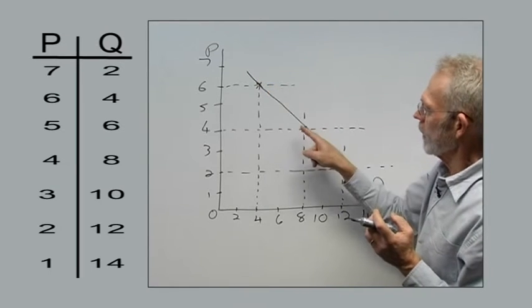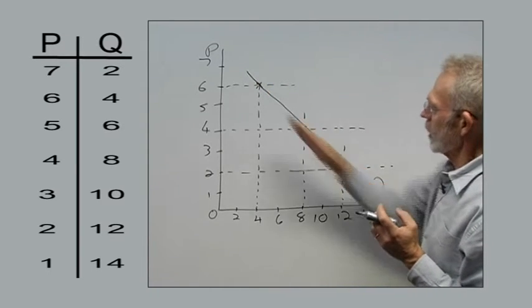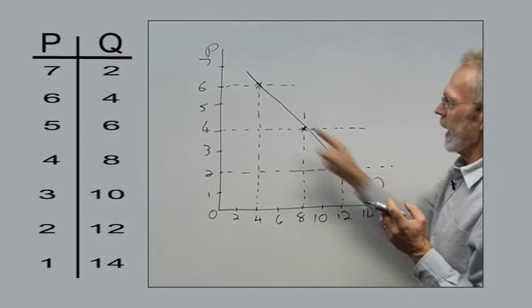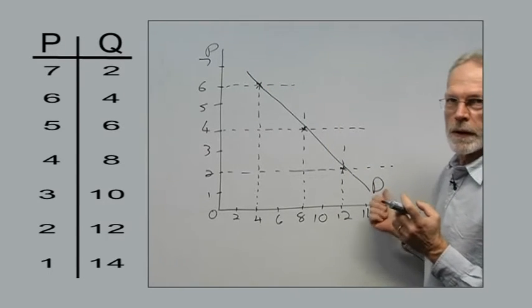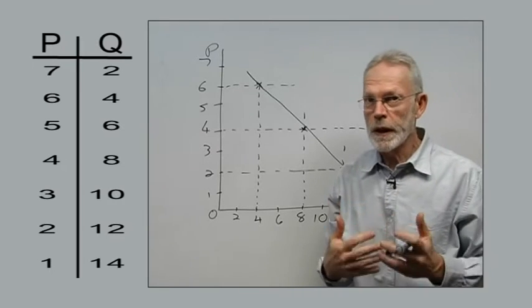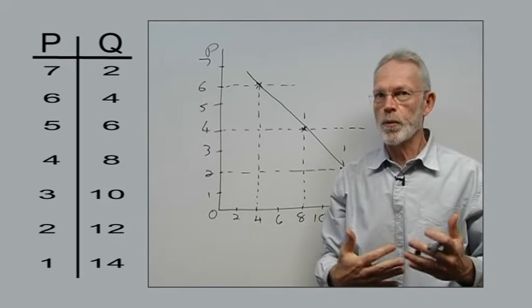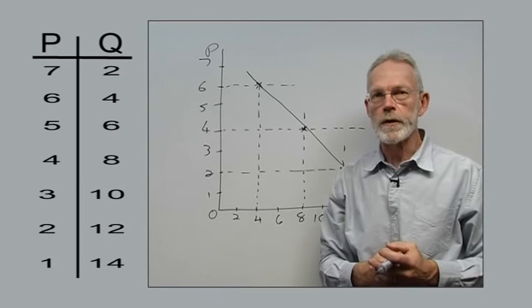And then we have the different combinations of price and quantity. And once we've derived those points, we link the points and that gives us the demand curve. And we name the demand curve. Make sure that you follow these steps when you draw a demand curve. Thank you so much for that.